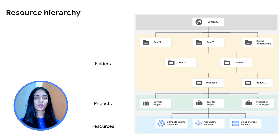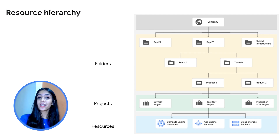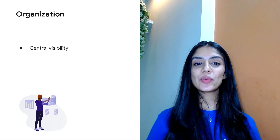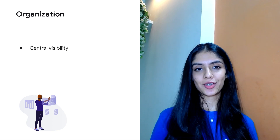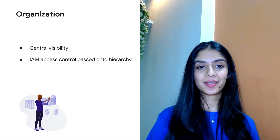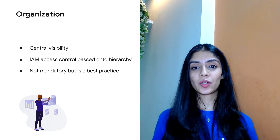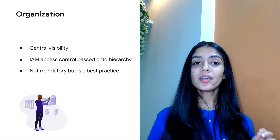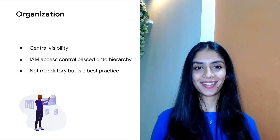Maybe you wouldn't want your research team's resources to be accessed by the other departments, so you can keep them isolated yet under one roof. And that one roof is an organization — the umbrella for your entire company and the root node. It is a prerequisite to have an organization in order to use folders. Organizations provide central visibility and control over every resource that belongs to that organization. The IAM access control policies applied to an organization apply throughout the hierarchy to all the resources. If you are a Google Workspace or a Cloud Identity user, when you create a Google Cloud project, an organization is automatically provisioned.